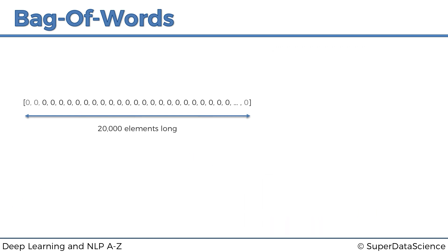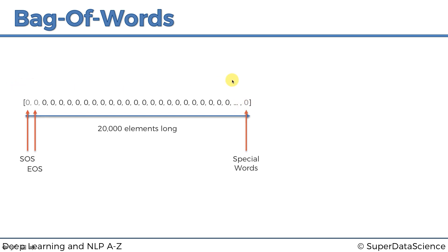The first two positions are reserved: SOS stands for start of sentence, and EOS stands for end of sentence. The last position is reserved for special or unknown words. If any of those other 150,000 words we didn't include come up, we'll associate them with that last element — any word we can't recognize in our 20,000 gets thrown into that last slot.